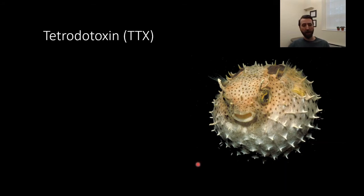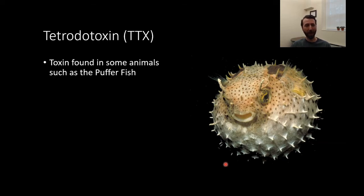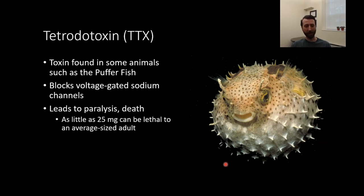You've all probably heard that pufferfish carry a deadly neurotoxin. It's an exciting thing to eat a pufferfish because if it's not prepared correctly, you'll die. I'm not sure exactly why people do it, but people do it. So the toxin present in pufferfish is called tetrodotoxin, or TTX for short. The way it works is by blocking voltage-gated sodium channels. And this leads to paralysis and possibly death. As little as 25 milligrams, which is not a very large amount, can be lethal to an average-sized adult.